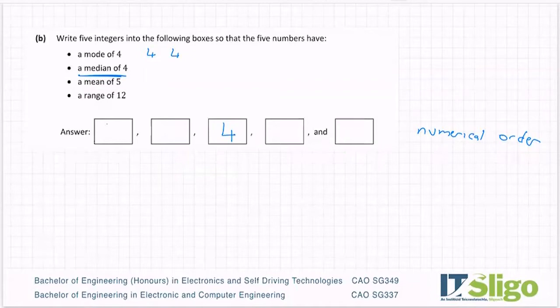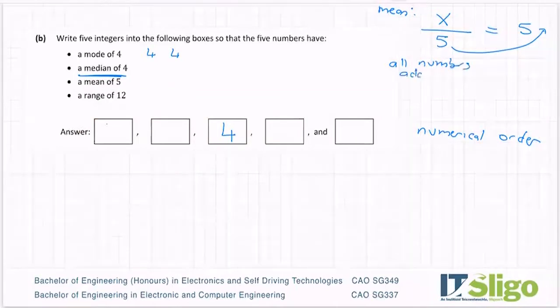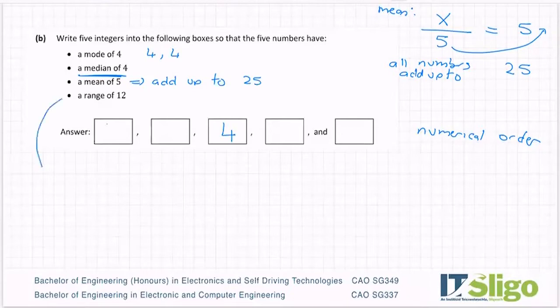So if I have a mean of five, whatever my number is on top, I'm going to divide it by five numbers. And I'm going to get a mean of five. So this is the mean one I'm looking at here. So all the numbers add up to 25. So I now know that they need to be in numerical order, and they need to add up to 25. That's what I can tell from a mean of five.